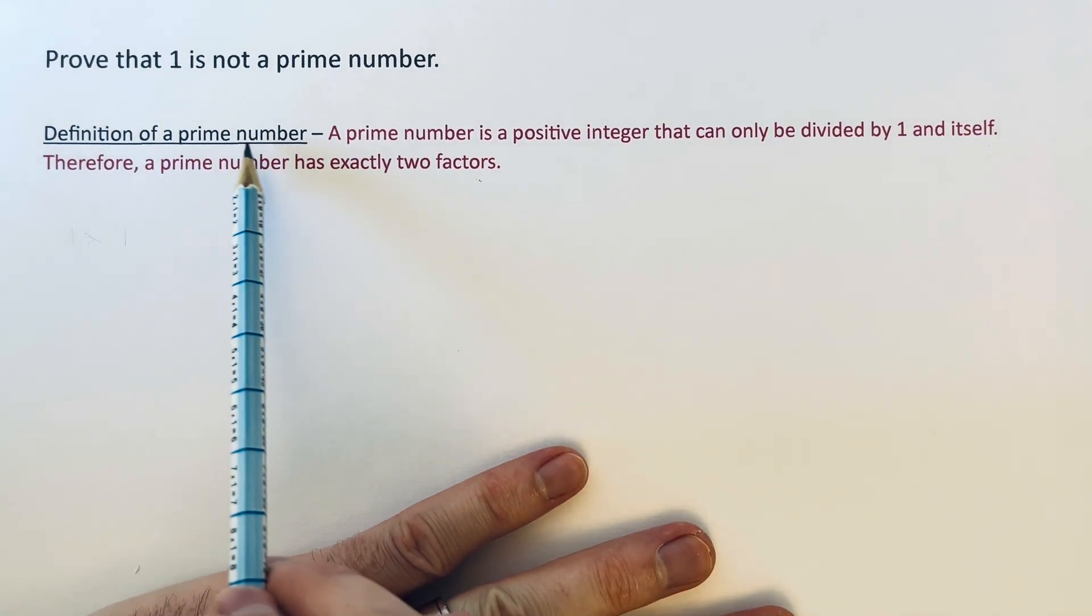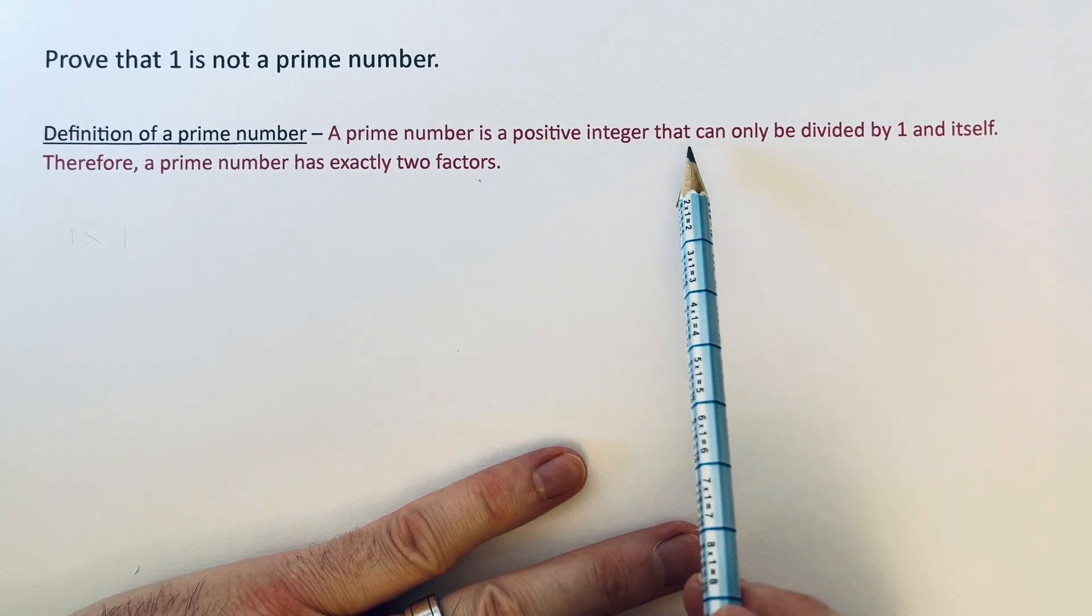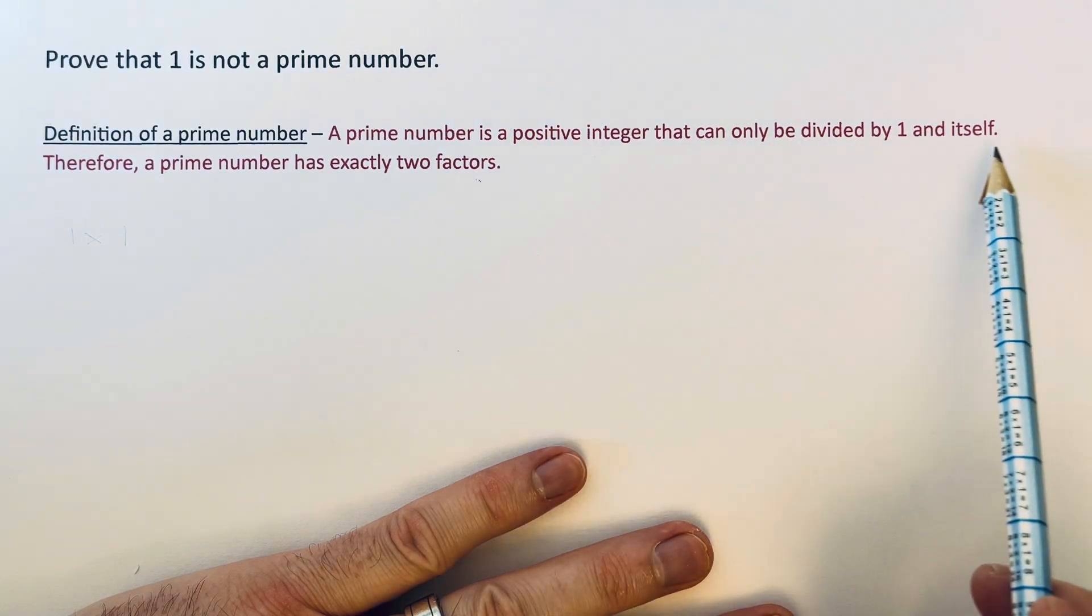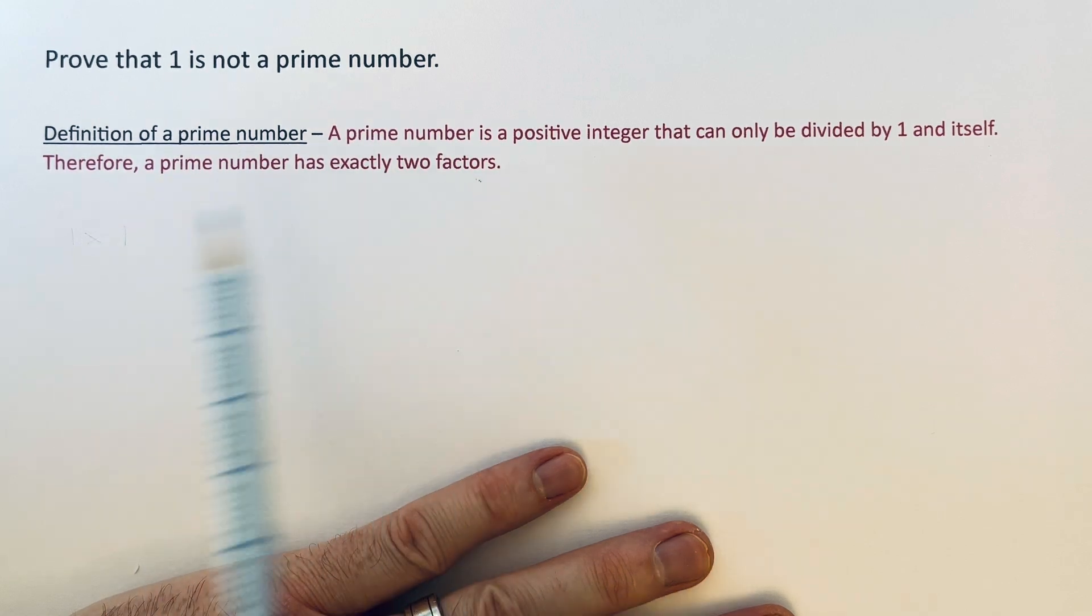To do this you need to know the definition of a prime number, which is a prime number is a positive integer that can only be divided by 1 and itself. Therefore a prime number has exactly two factors.